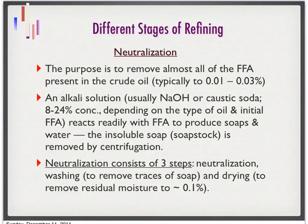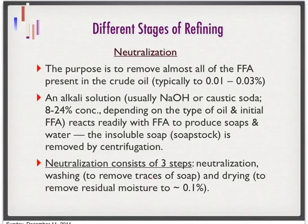Basically there are three steps in the neutralization process. First, the neutralization itself — adding alkali to the oil. Second, we remove the soap by separating the soap stock from the oil using centrifugation. After that, there may be traces of soap which can be removed further by a washing step. Finally, a drying step removes whatever moisture remains, down to around 0.1%.